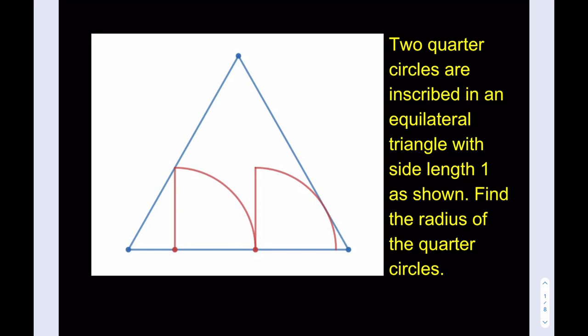Two quarter circles are inscribed in an equilateral triangle with side length 1 as shown. Find the radius of the quarter circles. So these two quarters are identical, even though it wasn't mentioned in the statement, they are congruent and we're gonna find the radius of them. Let's get started.